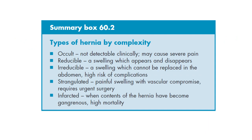Types of hernia by complexity: Occult — not detectable clinically, may cause severe pain. Reducible — a swelling which appears and disappears. Irreducible — a swelling which cannot be replaced in the abdomen, with high risk of complications. Strangulated — painful swelling with vascular compromise, requires urgent surgery. Infarcted — contents of the hernia have become gangrenous; this has high mortality.